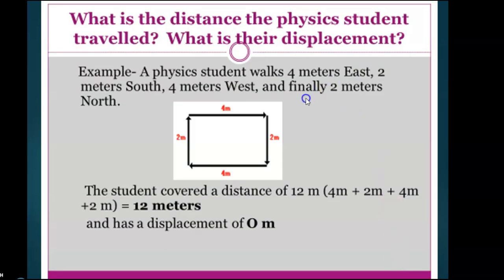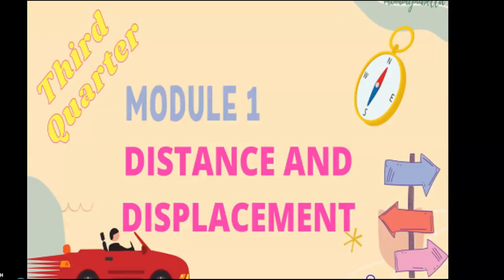A physics student walks 4 meters, 2 meters south, 4 meters west, and finally 2 meters north. You add everything: 4 plus 2 plus 4 plus 2 equals 12 meters. The displacement is 0, because the end point is the same as the starting point — where the student started is where the student finished. Remember: displacement measures from starting point to end point, so if they are the same, the answer is 0.